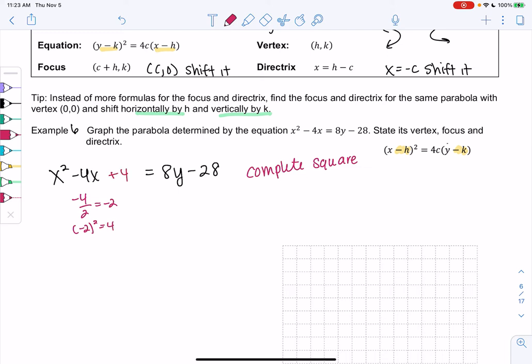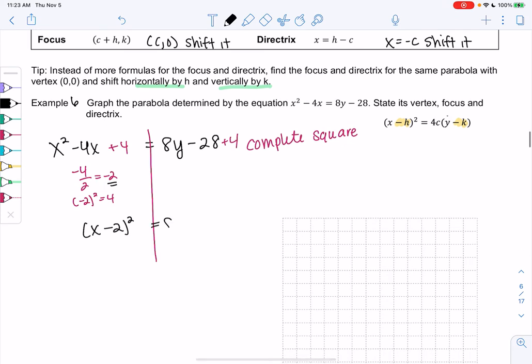So we add 4. As long as we do that to both sides, we have an equation, we add 4 to both sides. It's allowed. So that tells me I will have (x - 2)². Then on the right side, we'll simplify a little. We get 8y - 24. And then we'll factor.